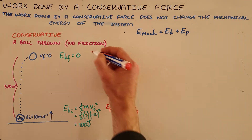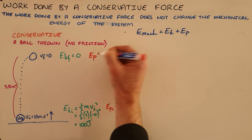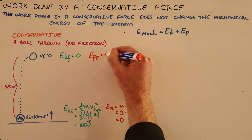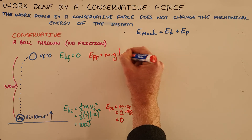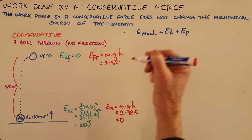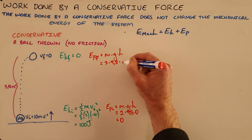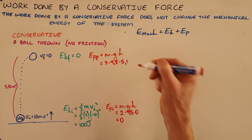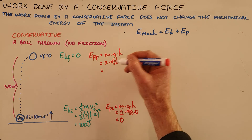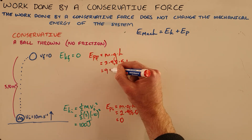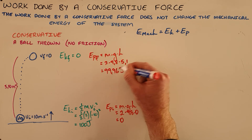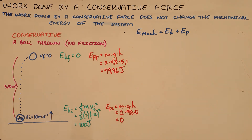At the end, when its kinetic energy is zero, since the object now has a certain height above the ground, it will have a certain amount of gravitational potential energy — and that amount is 99.96 joules of gravitational potential energy.